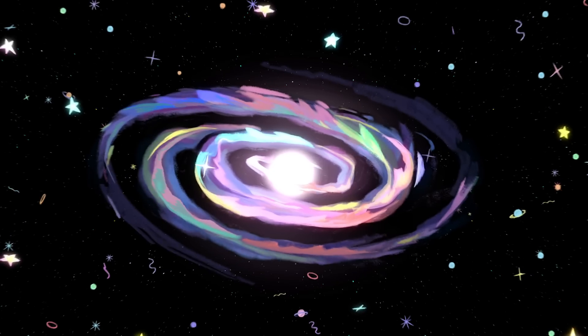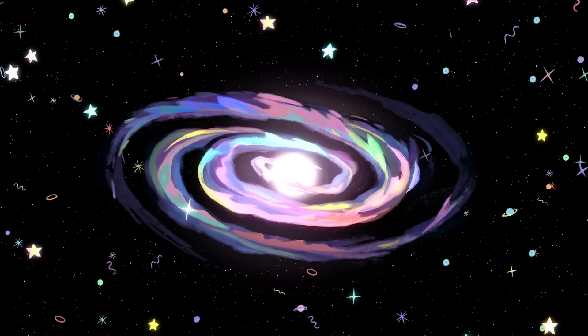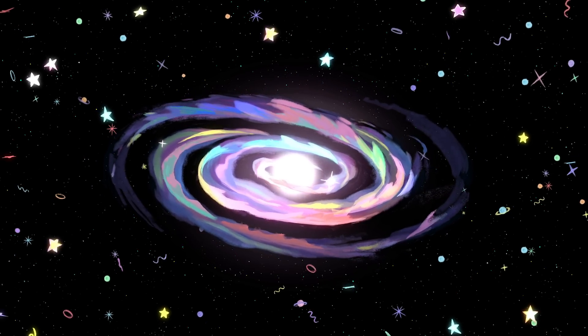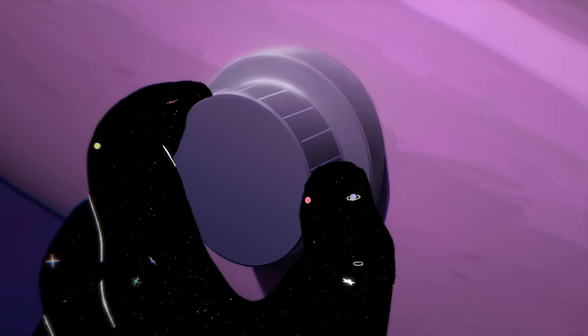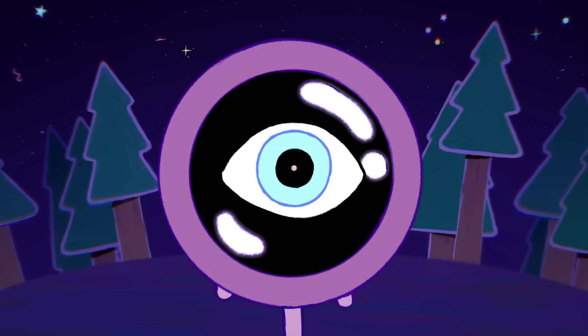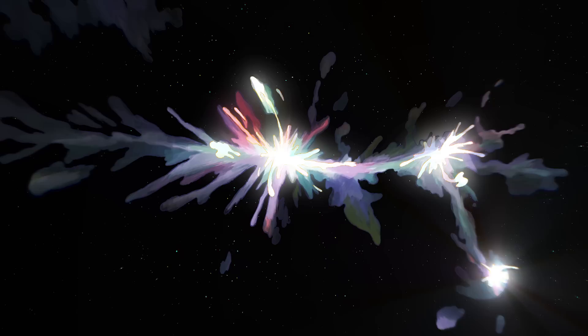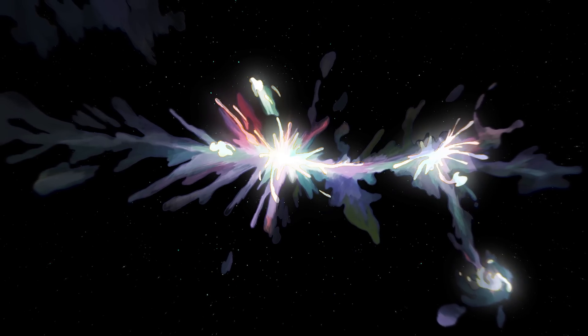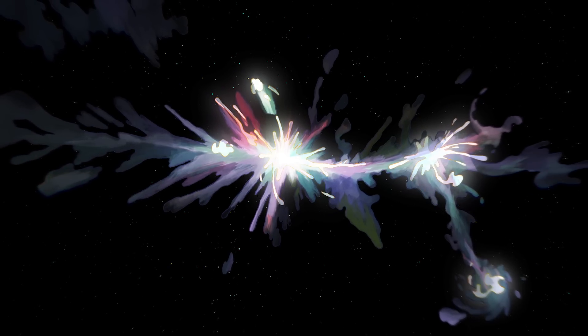The Milky Way never stops changing. Even its structure continues to evolve. To see why, let's start at our galaxy's very beginning. 13 billion years ago, propelled by supernovae and the general chaos of the early universe, the gas and dust particles that eventually became our Milky Way were whizzing around in every direction.